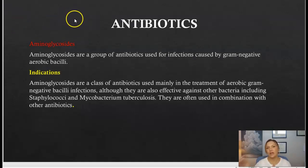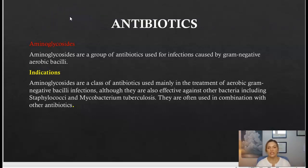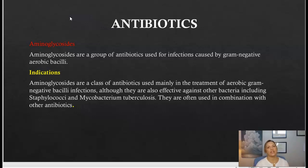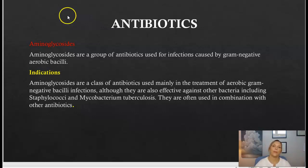First, the aminoglycosides. This class of antibiotic is used to treat infections caused by gram-negative aerobic bacilli. Aminoglycosides are also effective against other bacteria including staphylococci and Mycobacterium tuberculosis, and they are often used in combination with other antibiotics.